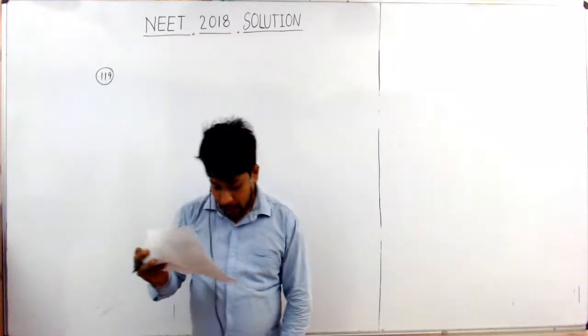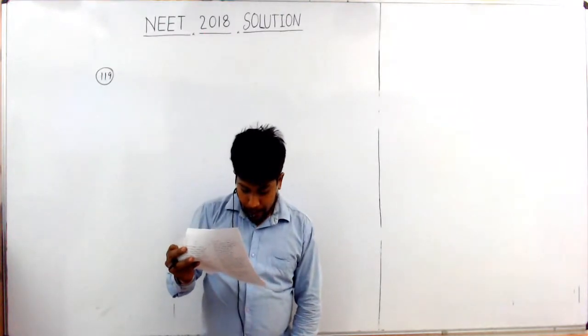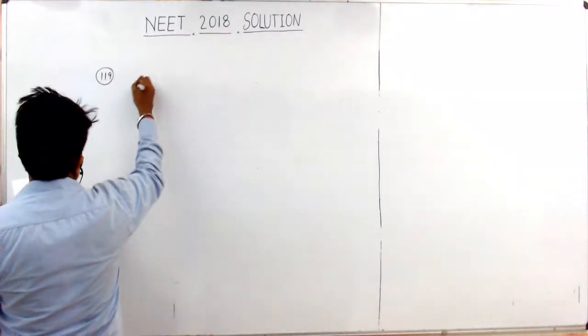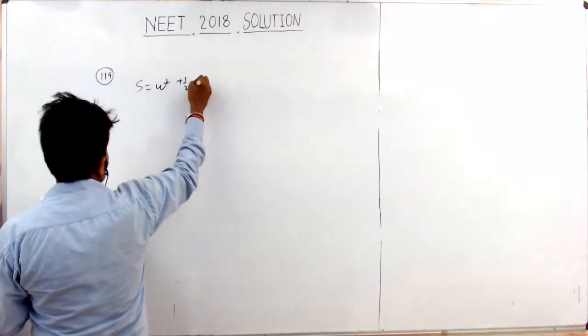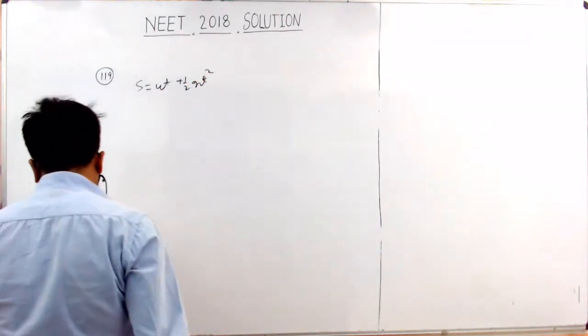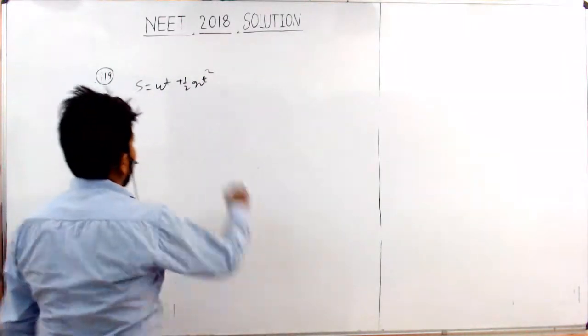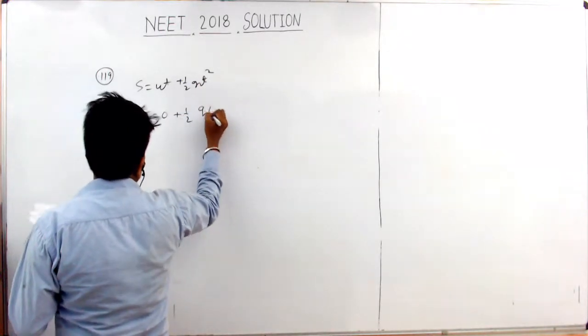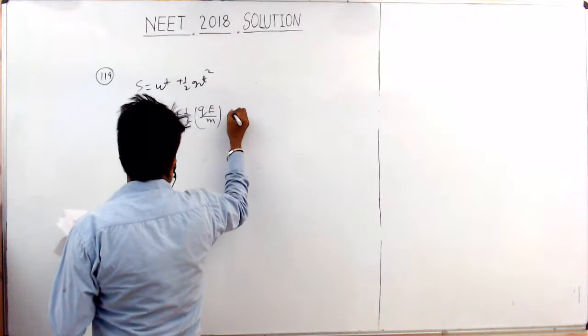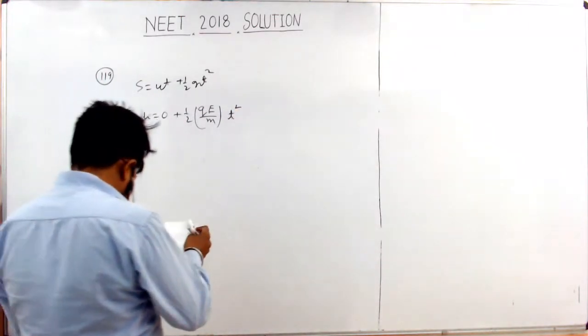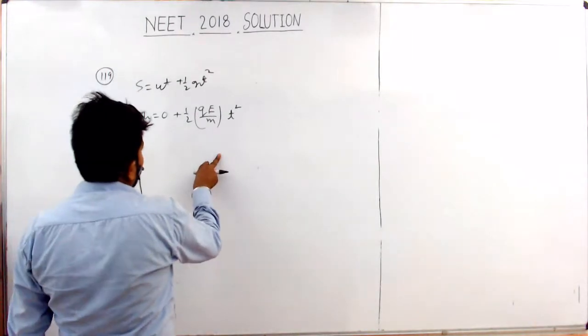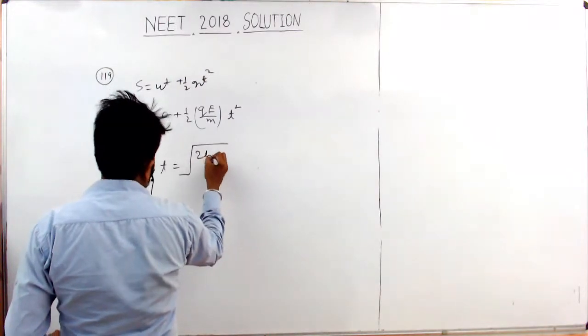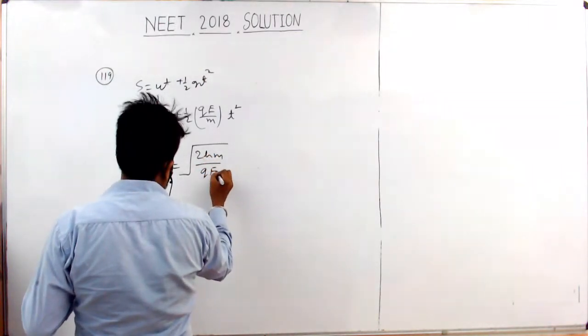The time of fall can be found using the equation: t equals square root of 2hM divided by QE, where M is mass, Q is charge, and E is electric field.